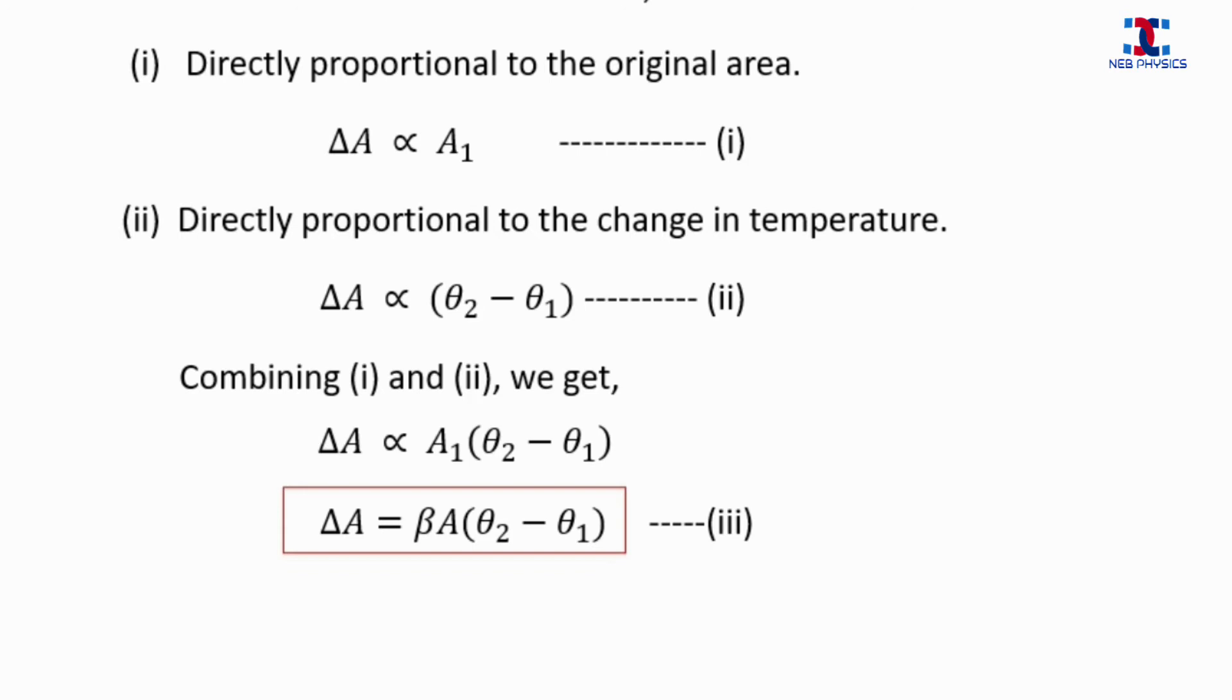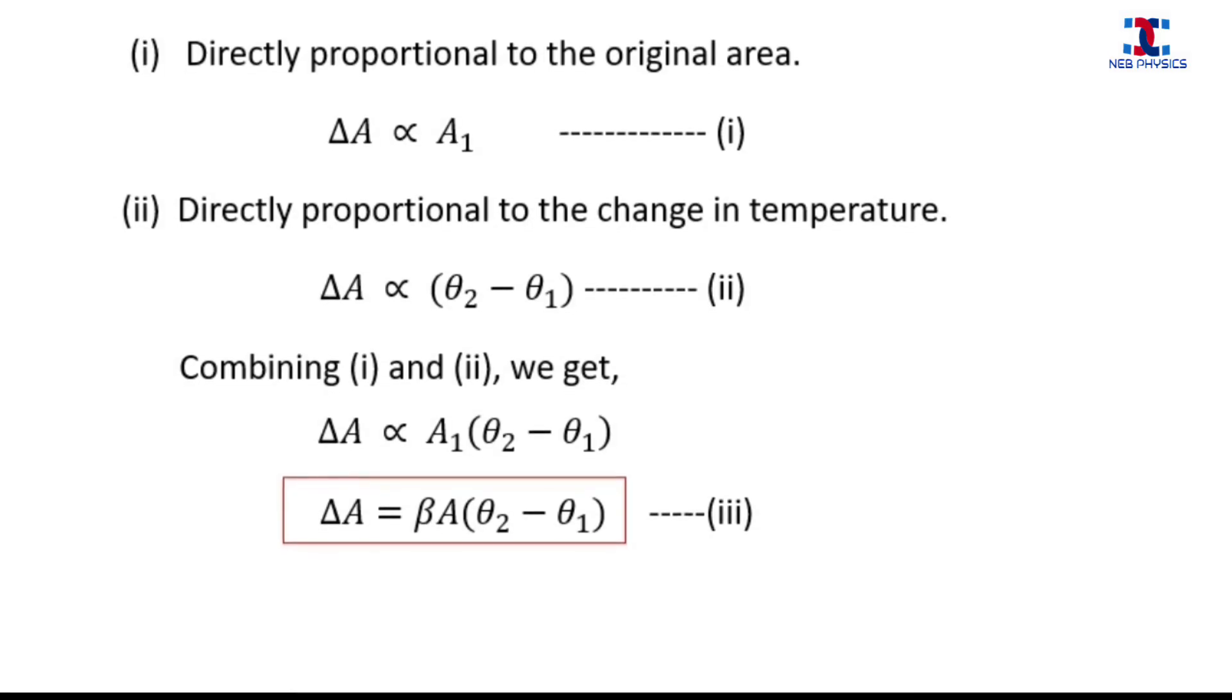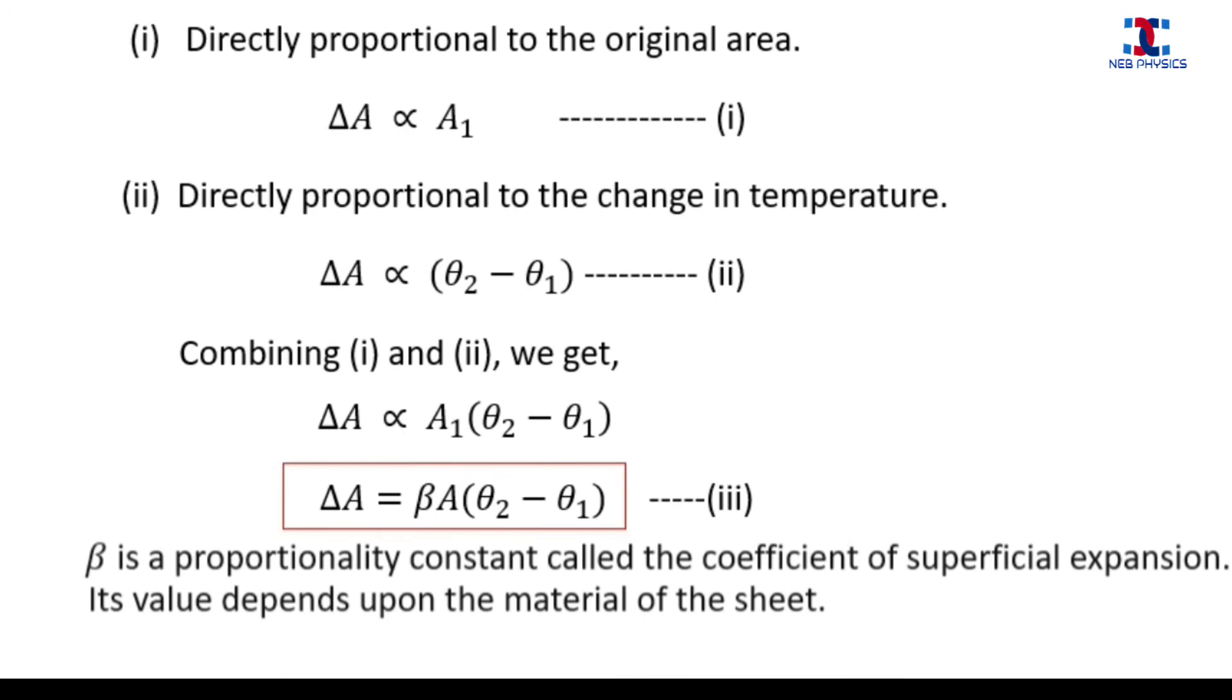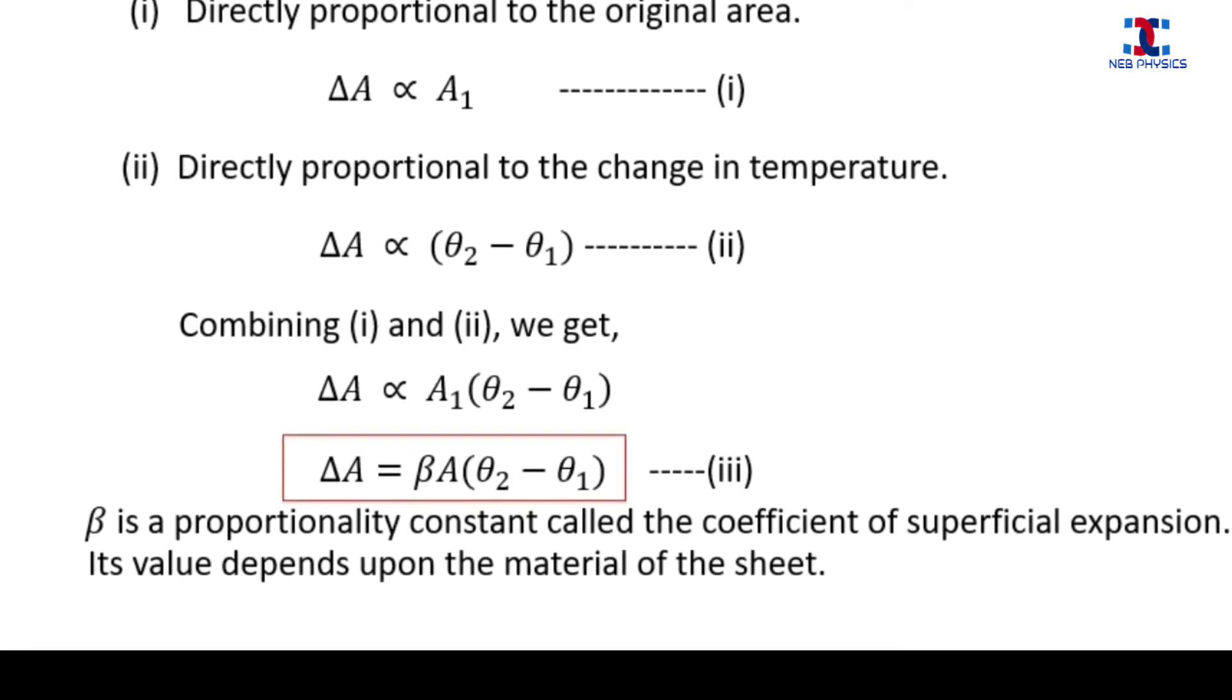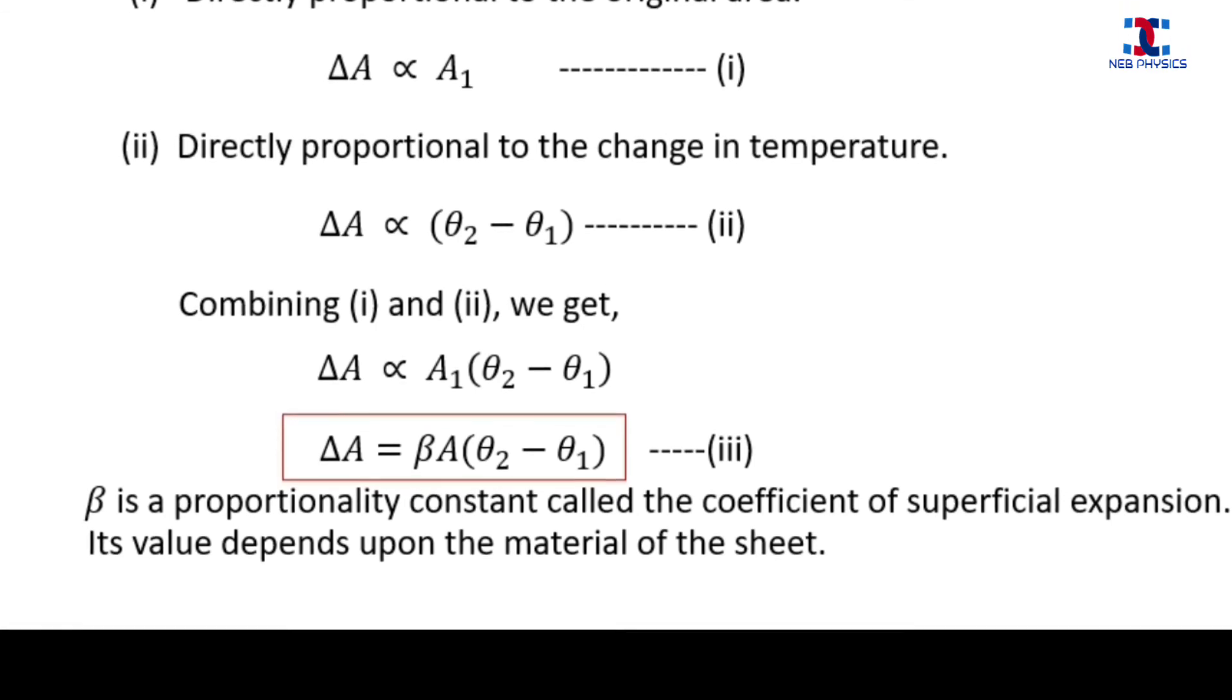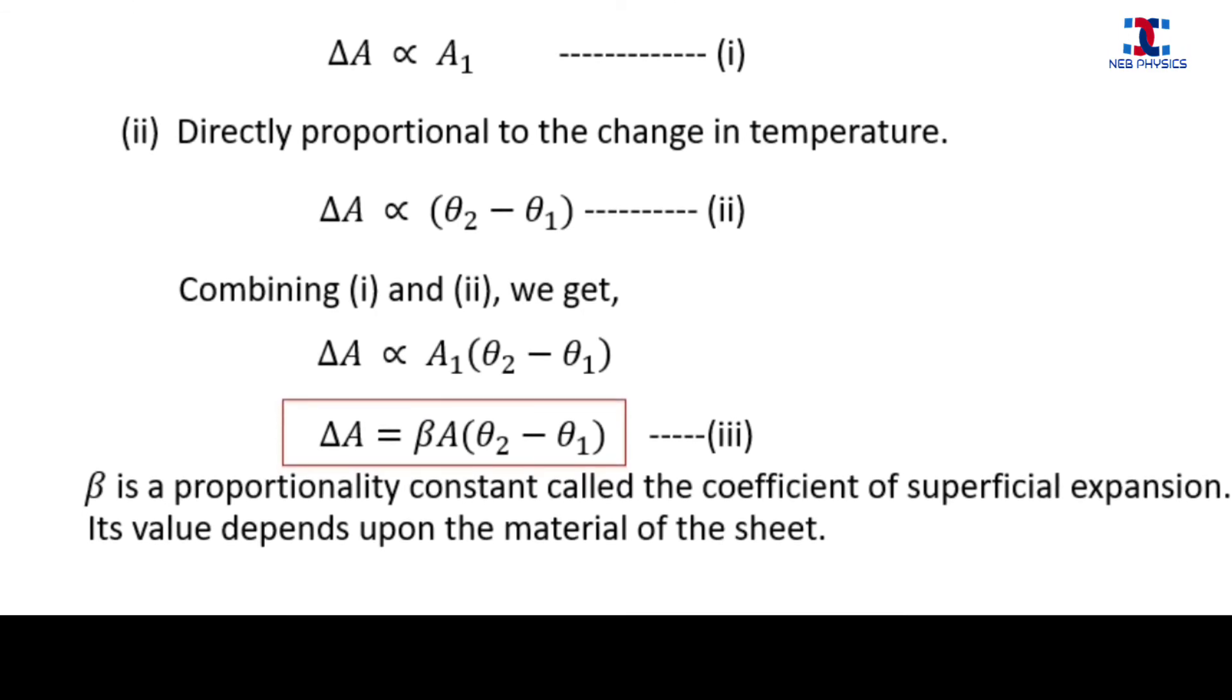In equation 3, β is a proportionality constant called the coefficient of superficial expansion. Its value depends upon the material of the sheet.